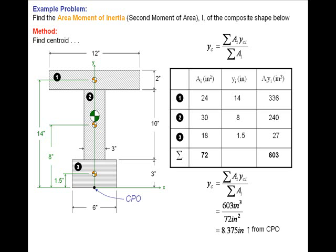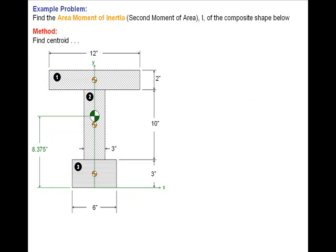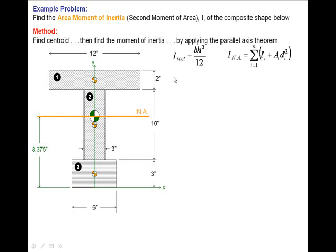Now that we know the location of the centroid, we can find the moment of inertia. Recognizing that these are all rectangles, we know that the moment of inertia for a rectangle is BH cubed over twelve, but that's the moment of inertia about its own neutral axis passing through its own centroid, so we've got to make use of the parallel axis theorem, since the neutral axis of the composite shape doesn't pass through the neutral axis of any of those sub-shapes.